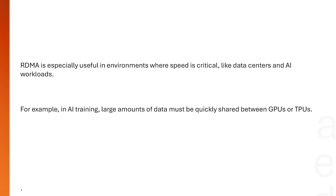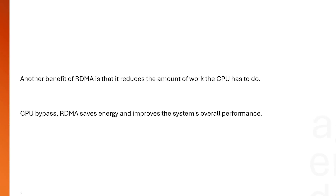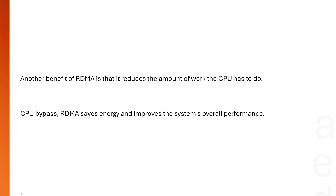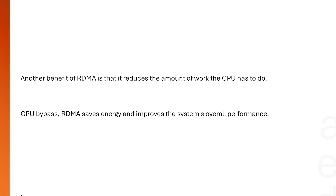RDMA also frees the CPU to handle other important background tasks. It is especially useful in environments where speed is critical, like data centers and AI. In AI training, large amounts of data need to be shared between GPUs or TPUs very quickly — during synchronization, for example. Another benefit of RDMA is that it reduces the amount of work the CPU has to do, saving energy and improving the overall performance of the system.